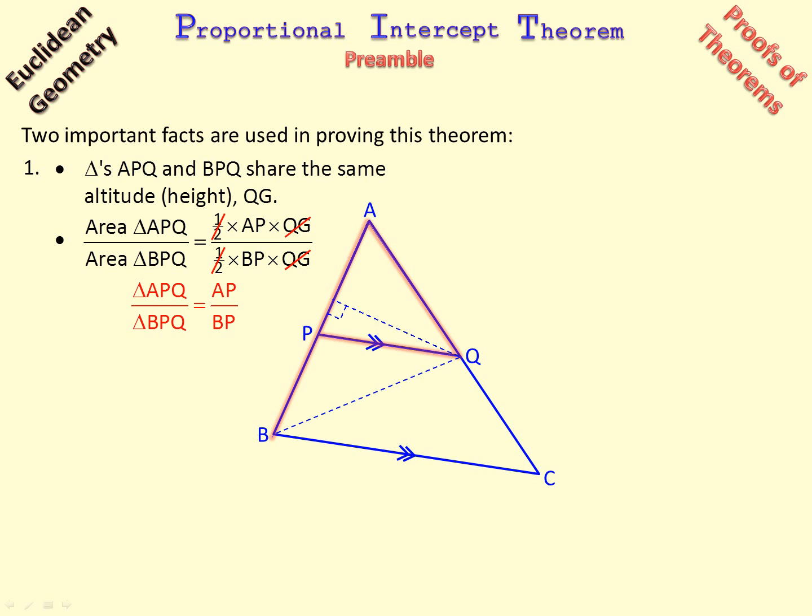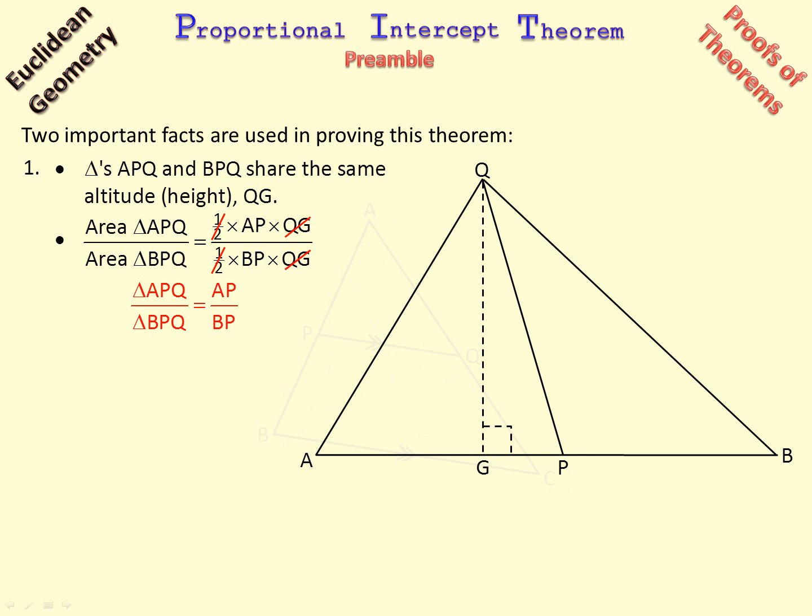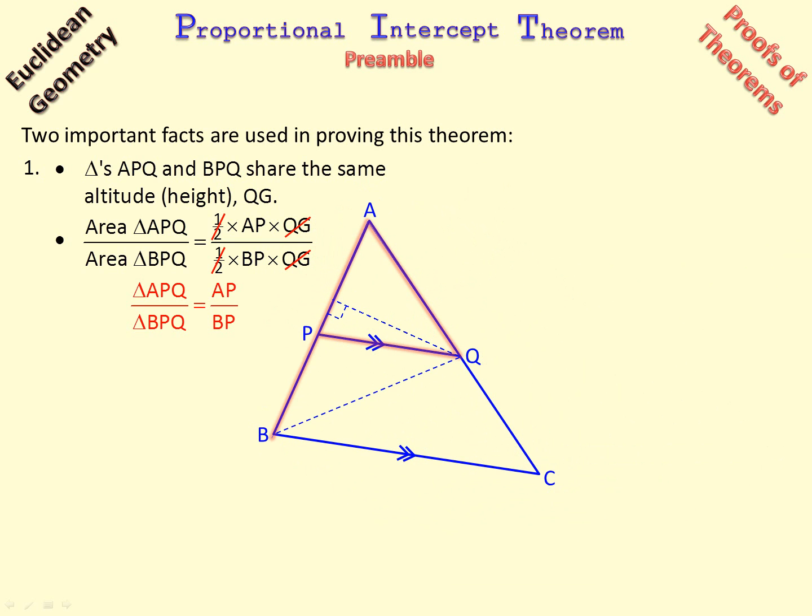And there, that fits into your proportional intercept theorem. There is a shadow of the proportional intercept theorem there. Now have a look how this setup fits right into it, and we are going to use that in the proof of proportional intercept theorem.